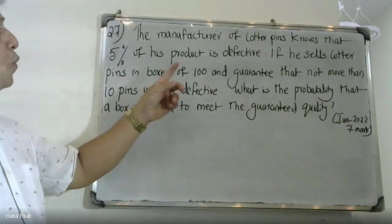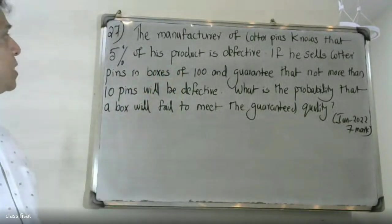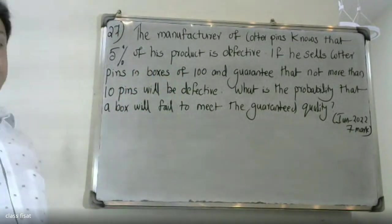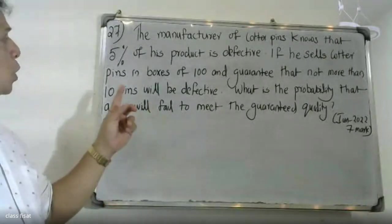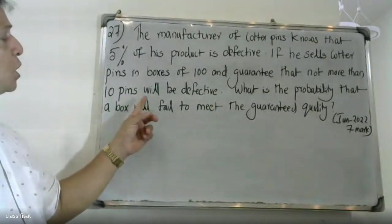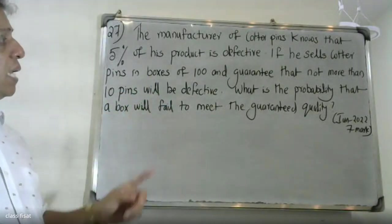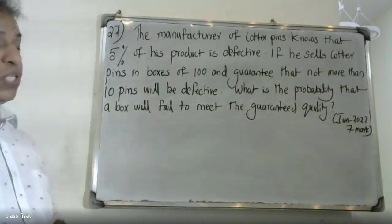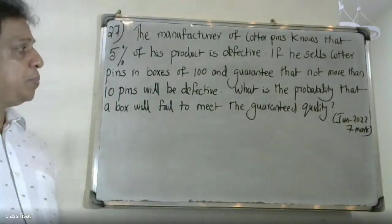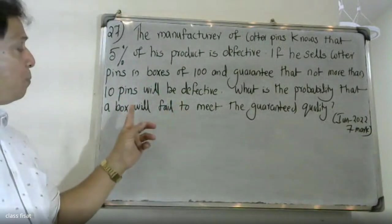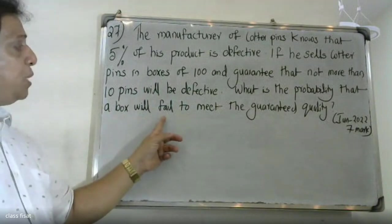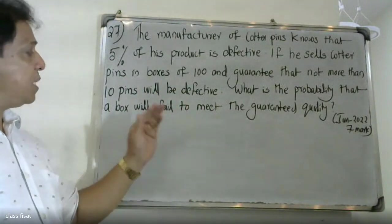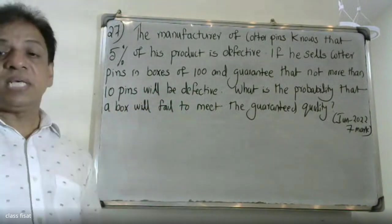The manufacturer of quarter pins knows that five percent of his product is defective. If he sells quarter pins in boxes of 100 and the guarantee is that not more than 10 pins will be defective, what is the probability that a box will fail to meet the guaranteed quality?